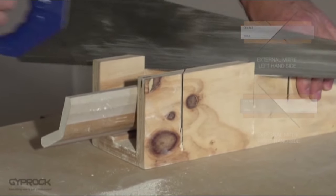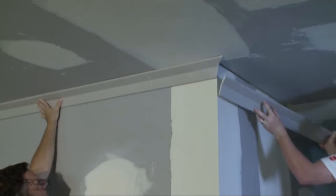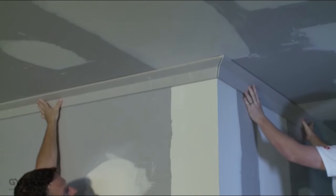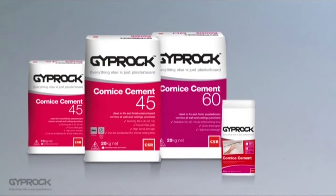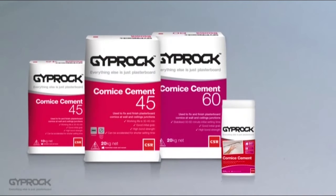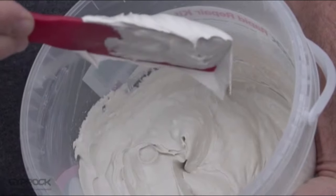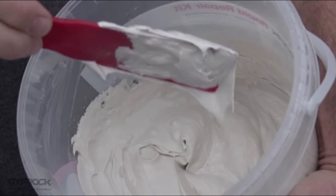Once your corners lengths are cut it's a good idea to check that the lengths and corner cuts are right before you start applying any adhesive. If you're using a dry Gyproc cornice cement mix with water as per the instructions on the pack to give a smooth creamy consistency.